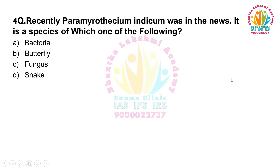Moving to the next question. Recently, Para Myrothosium indicum was seen in news. It is a species of which one of the following? Option A: Bacteria. Option B: Butterfly. Option C: Fungus. Option D: Snake.